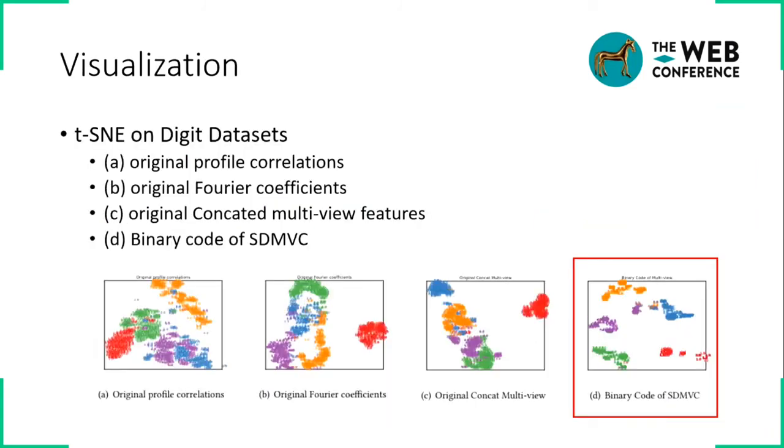This is the t-SNE visualization of the original single-view feature and learned discrete representation by the proposed method on a digit dataset. The learned representation not only preserves the neighborhood structure of the data in the embedding space, but also mitigates the effects of the possible disturbance of the original features.